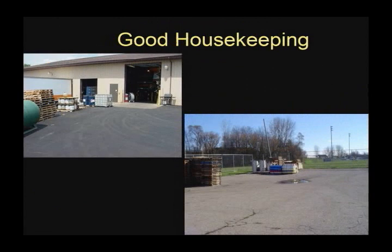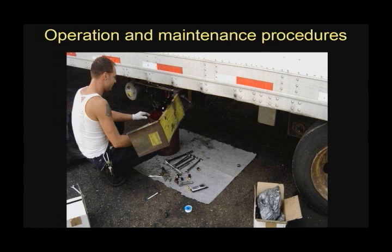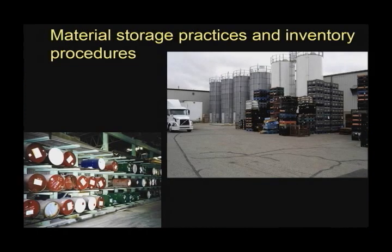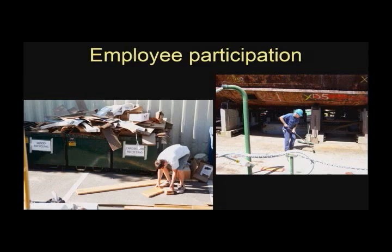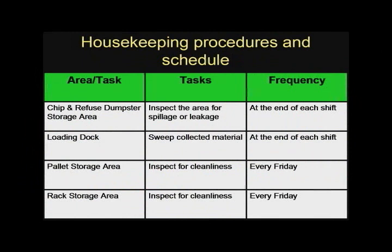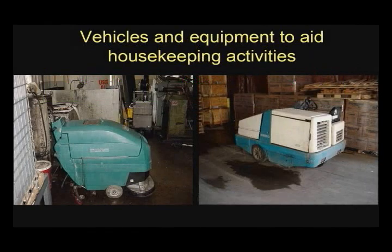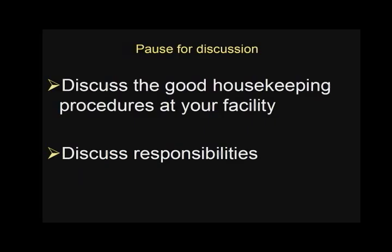Good housekeeping practices are designed to maintain a clean and orderly work environment. The first step in preventing pollutants from contaminating stormwater runoff is to use good housekeeping practices at your facility. Good housekeeping includes operation and maintenance procedures, material storage and inventory procedures, and employee participation. Good housekeeping practices are described in the stormwater plan, including the area where the activity is needed, the tasks involved, and the frequency at which the tasks will be completed. Housekeeping activities are often incorporated into the preventative maintenance inspection form.